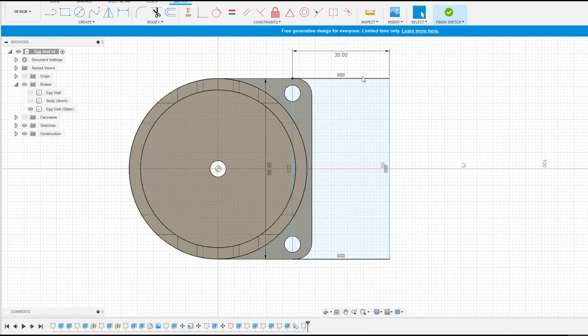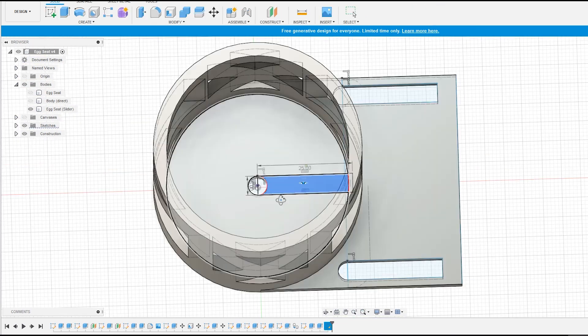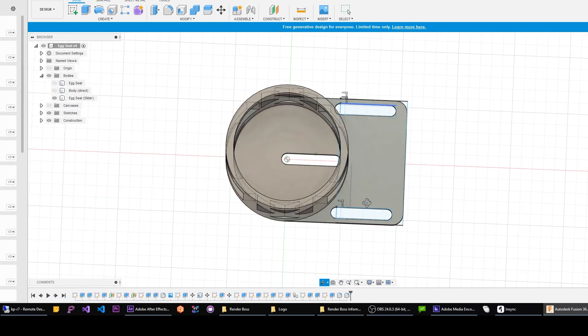To simulate the sliding cabin I modified the seat where the egg goes. I added grooves at the bottom so when it hits it can slide forward.